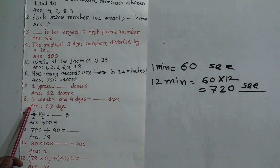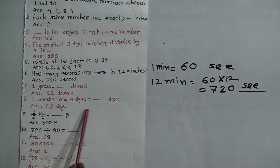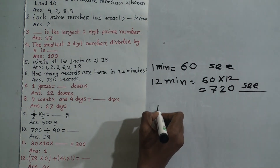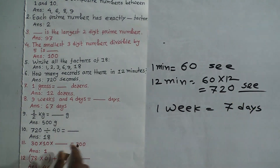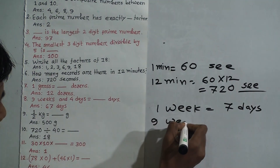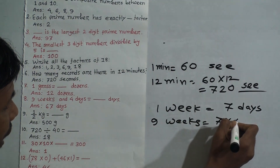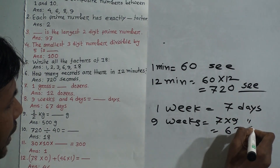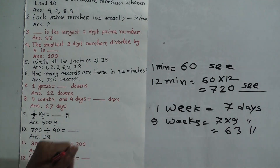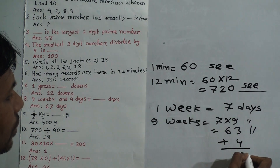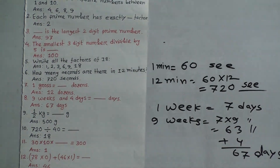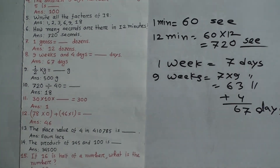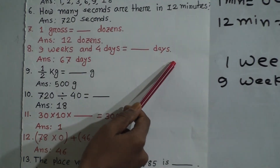Question 8: 9 weeks and 4 days equal how many days? We know 1 week equals 7 days. Therefore, 9 weeks equals 7 × 9 = 63 days. Adding 4 days gives 63 + 4 = 67 days. So the answer is 67 days.